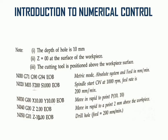Instruction block number 3, N03: G00 rapid traverse from the origin position. We consider the origin position at the corner of the job, and move the tool from the origin to the first drilling point. The first coordinate is X10.0, Y10.0. End of block.